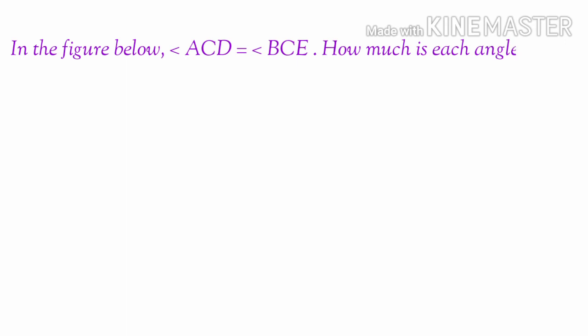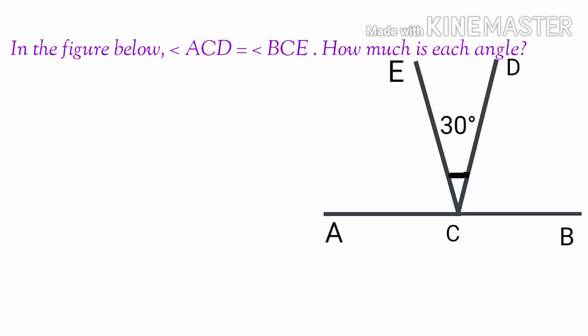In the figure given below, angle ACD is equal to angle BCE. How much is each angle? Angle ACD is equal to angle BCE, which means angle BCE plus angle DCB.